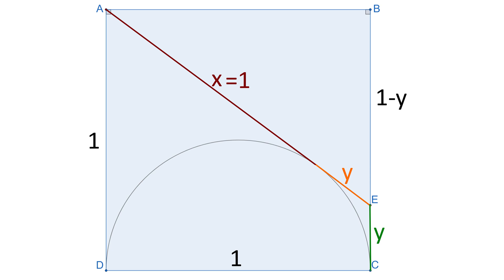Segment BE is 1 minus y. Now, we apply Pythagorean theorem to the yellow triangle. We have this equation.